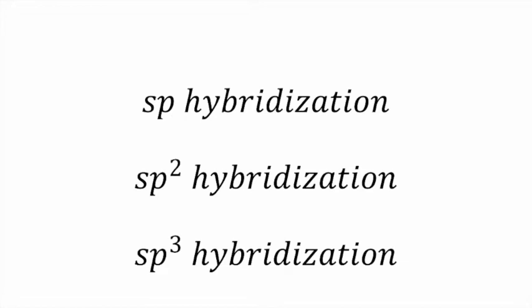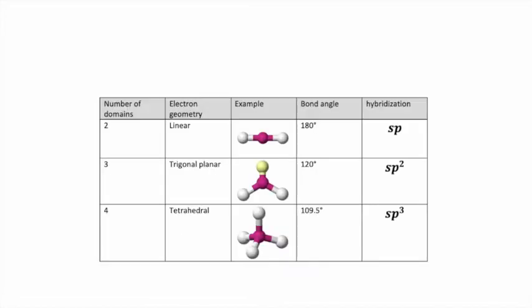And each of these orbitals aligns closely with the VSEPR shapes we've been studying. If we take a look at this table, we'll see that the linear electron geometry with a bond angle of 180 degrees has sp hybridization. The trigonal planar with a bond angle of 120 degrees has sp2 hybridization and tetrahedral molecules with angles of 109.5 have sp3 hybridization.